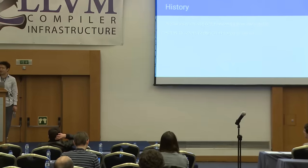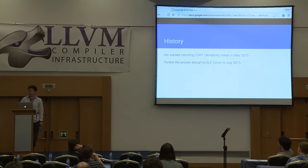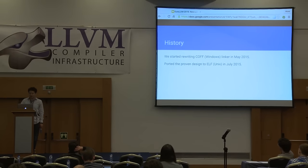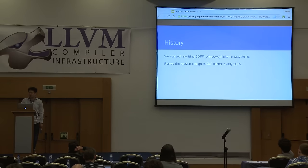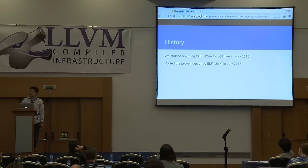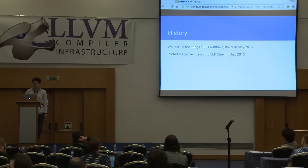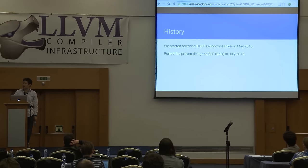Here is a brief history of the linker. LLD has a fairly long history. The first commit to the project was made in 2011, which is five years ago. I started working on the project in 2013. And since then, I have been working on that project, mainly working on COFF and ELF, which is for Windows and for Unix. My main goal was to provide a high-performance open source linker for Windows operating system. And after I spent a fair amount of time on the project, I realized that there is some room to improve it significantly by redesigning it.